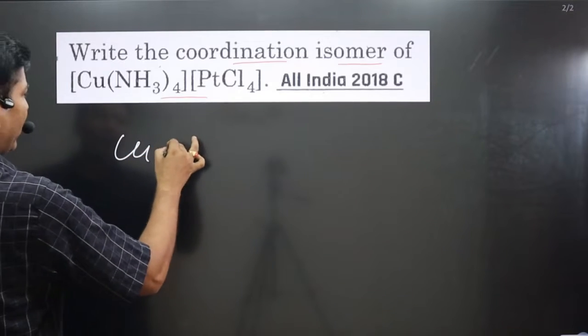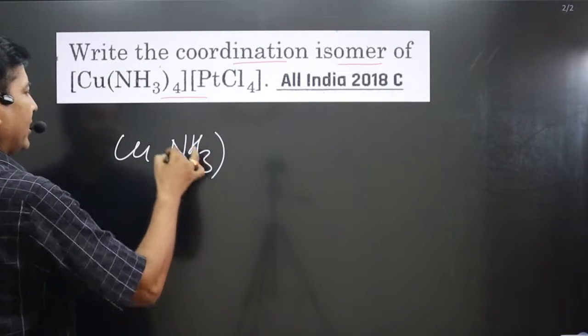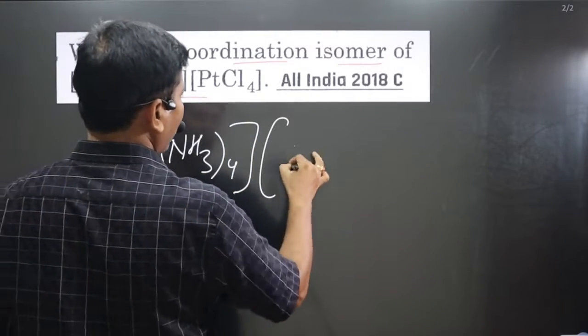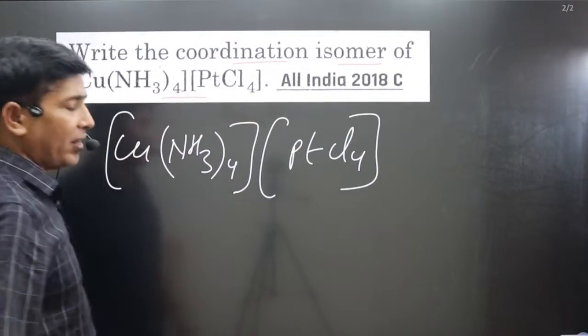If you look at the complex we have Cu and it is NH3. In this case ligand is ammonia. And in case of platinum what is the ligand? Cl4 is there.